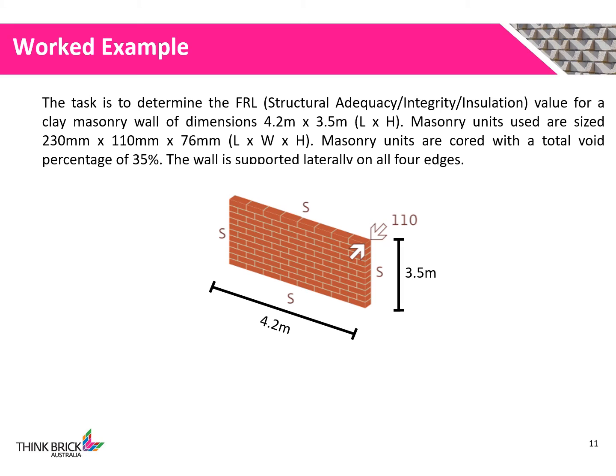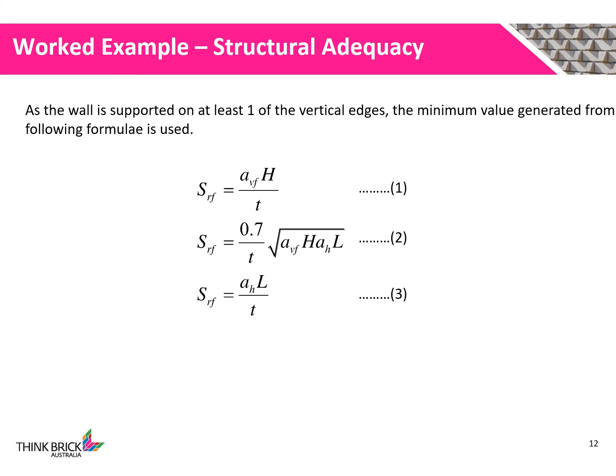The single leaf clay masonry wall has dimensions 4.2m by 3.5m. The masonry units are the standard brick size: 230mm by 110mm by 76mm. The units have a coring percentage of 35%. The wall is also supported laterally on all four edges, so at least one of the vertical edges is supported.